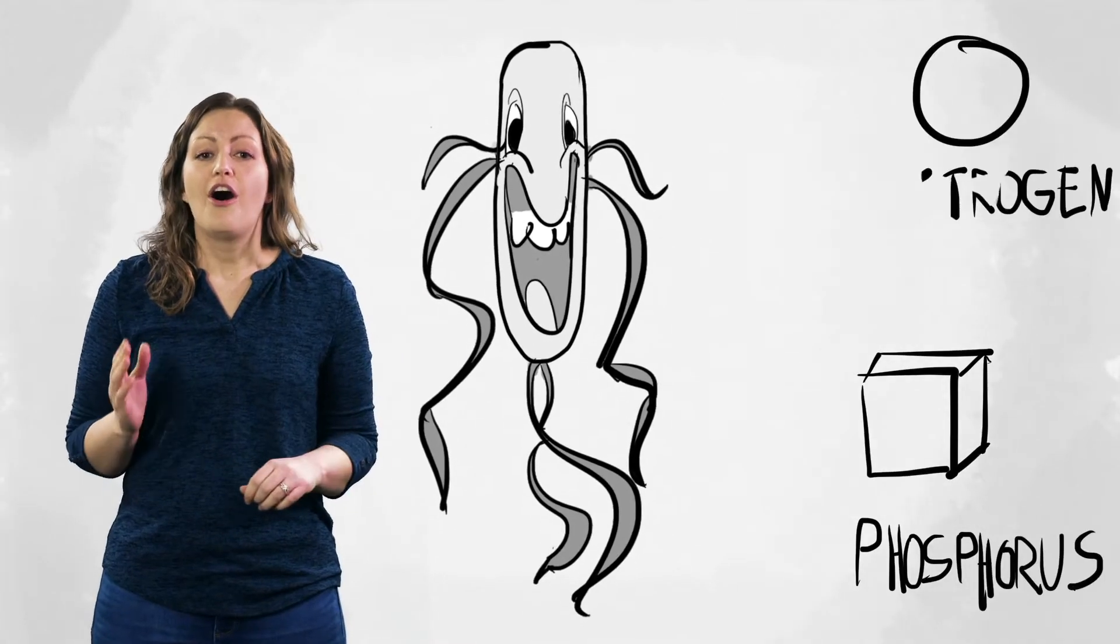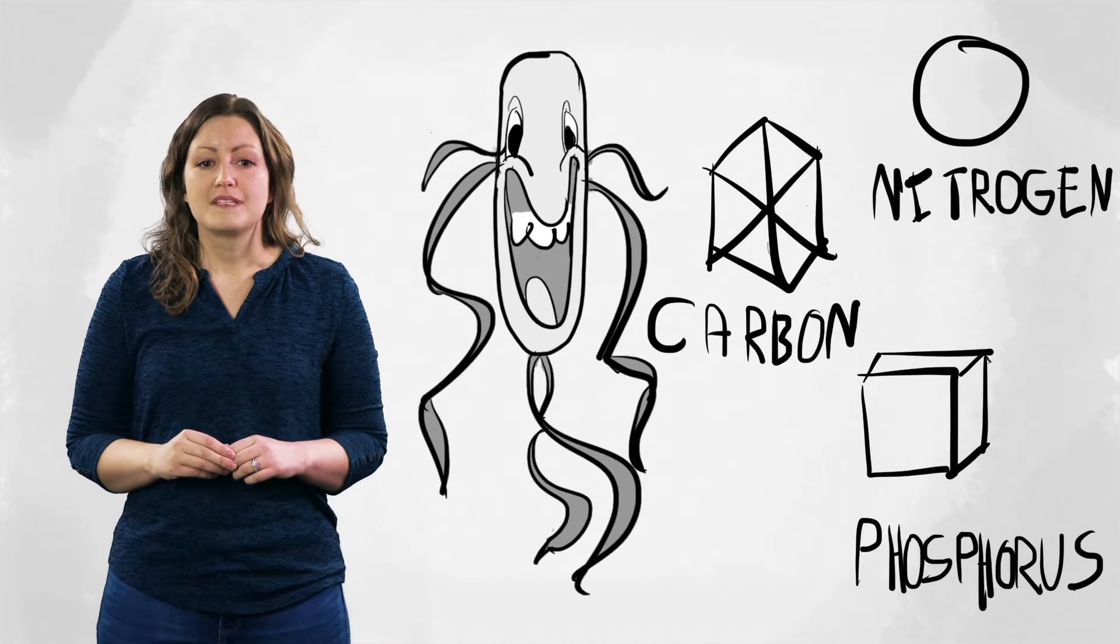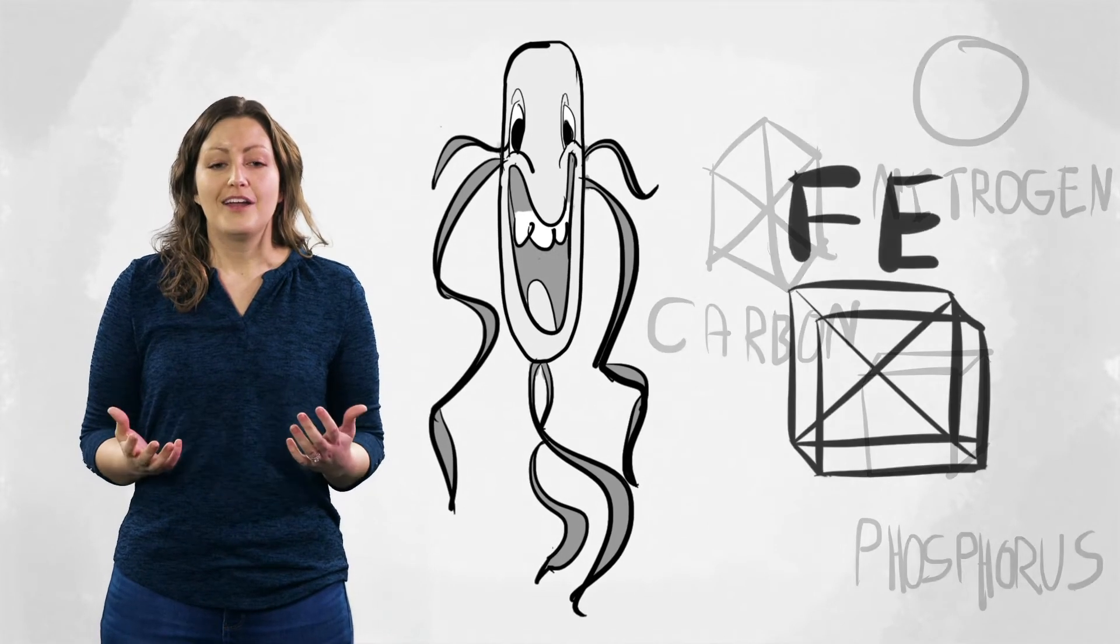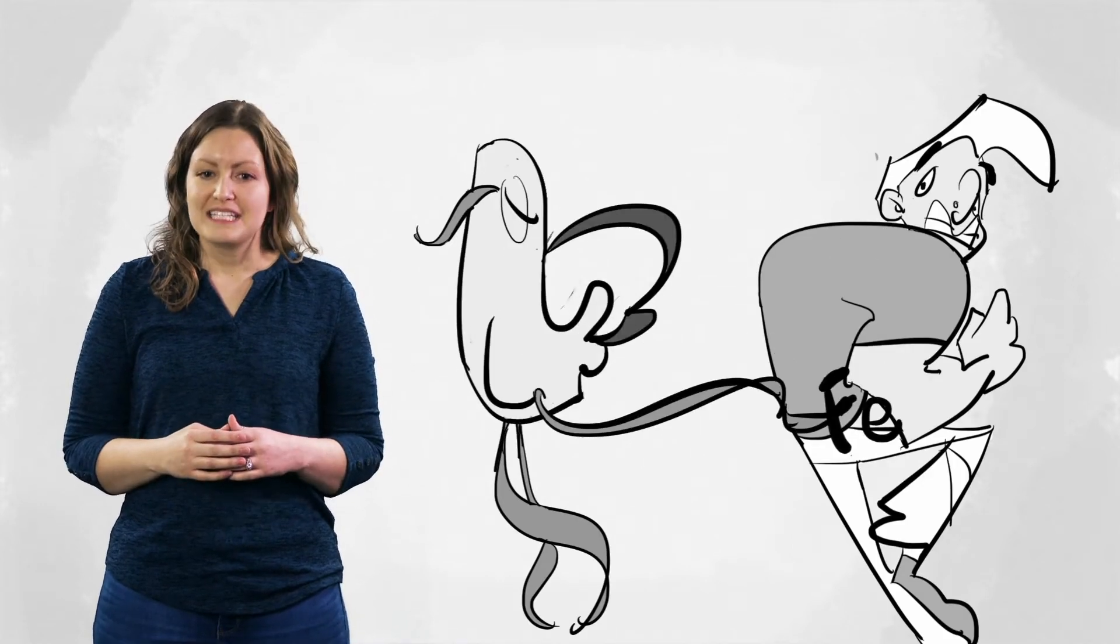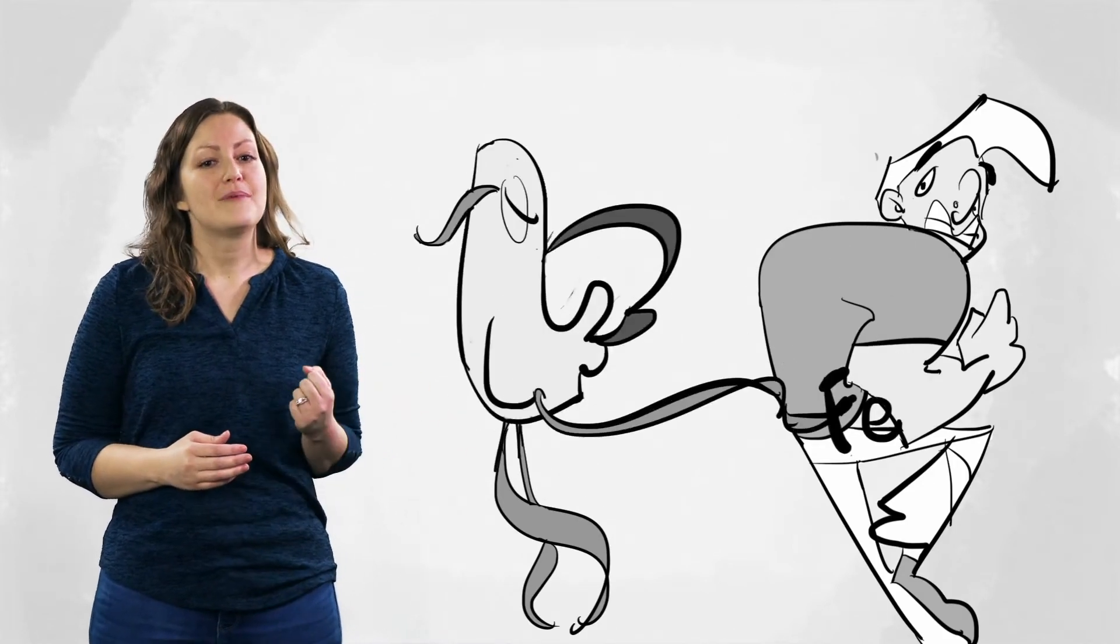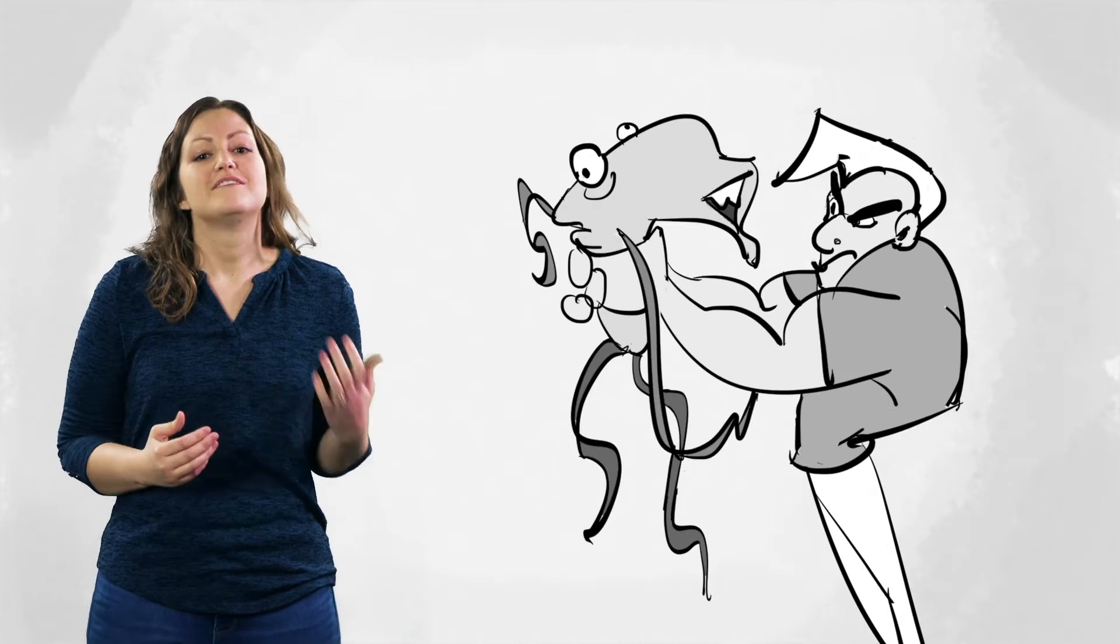For an invading pathogen, all of the nutrients they need must come from the host. Iron is an essential nutrient for bacterial survival, and just like tug-of-war, bacteria have strategies to get iron from us and our bodies have strategies to fight back.